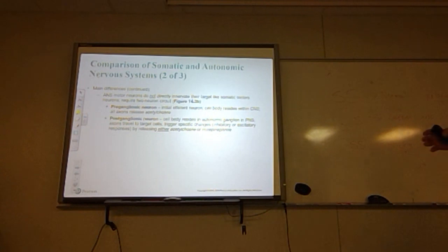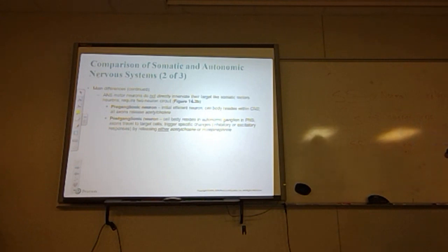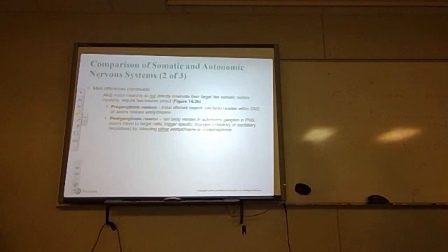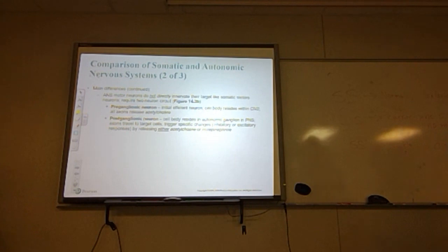The autonomic nervous system motor neurons do not directly innervate their targets like somatic motor neurons do. They require a two-neuron circuit. The pre-ganglionic neuron is the initial effector neuron whose cell body resides within the central nervous system, and all its axons release acetylcholine. The post-ganglionic neuron has its cell body in the autonomic ganglion of the PNS; its axons travel to target cells and trigger either inhibitory or excitatory responses, releasing either norepinephrine or acetylcholine.